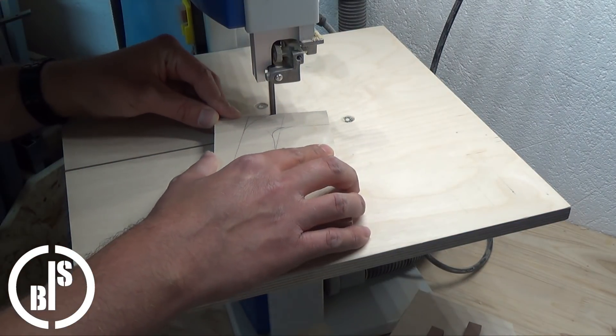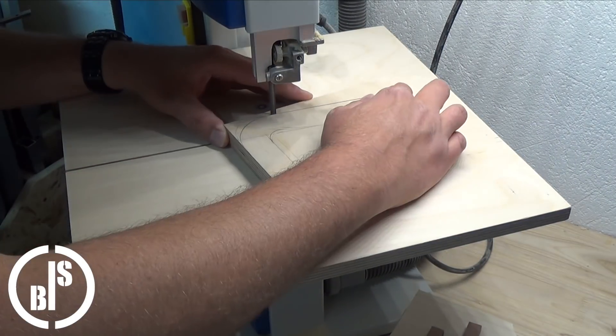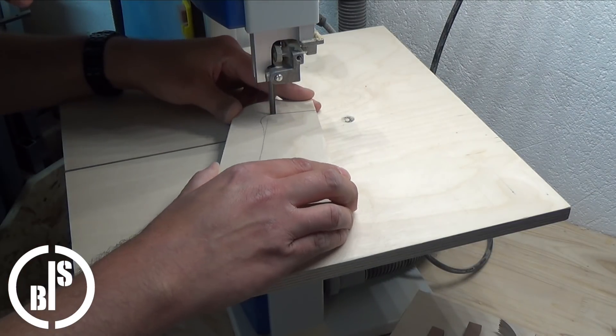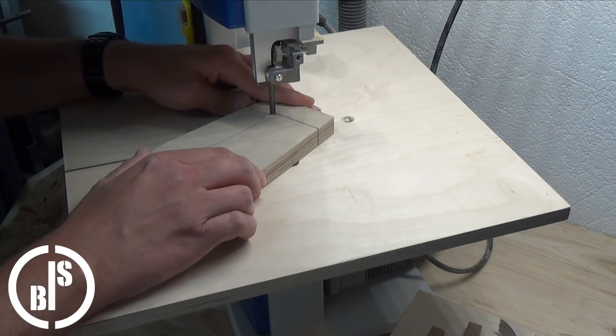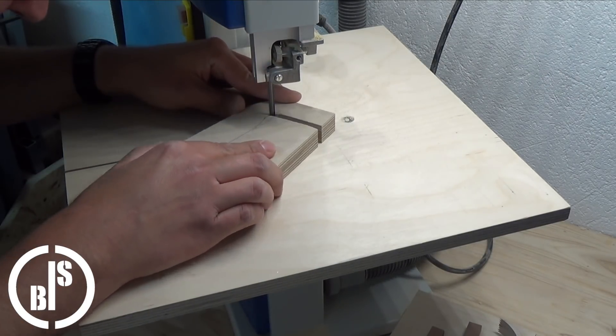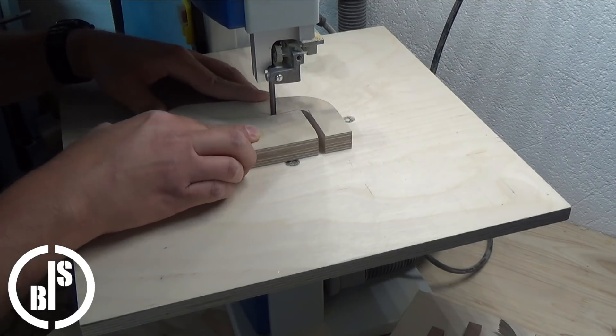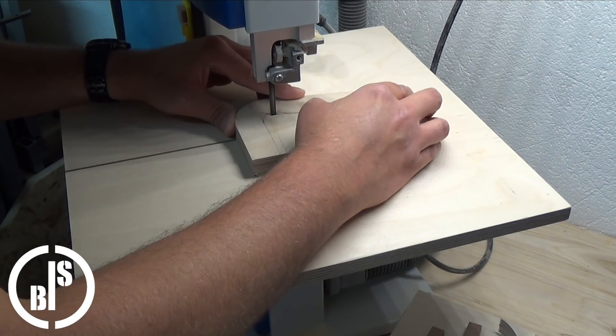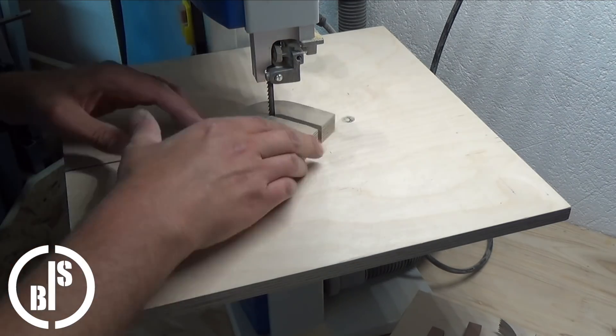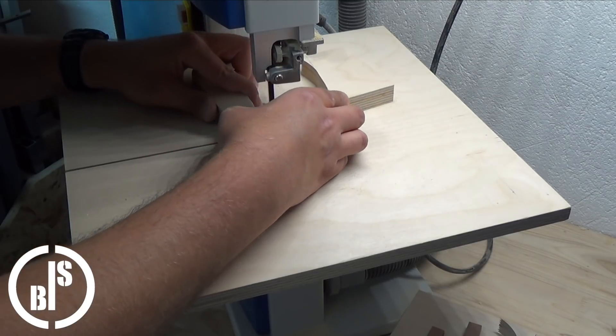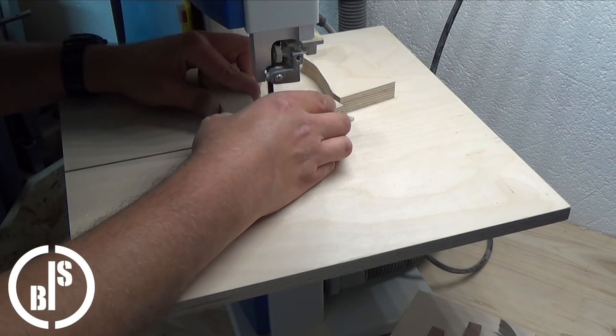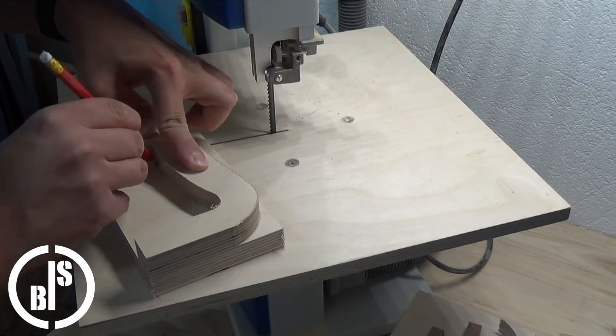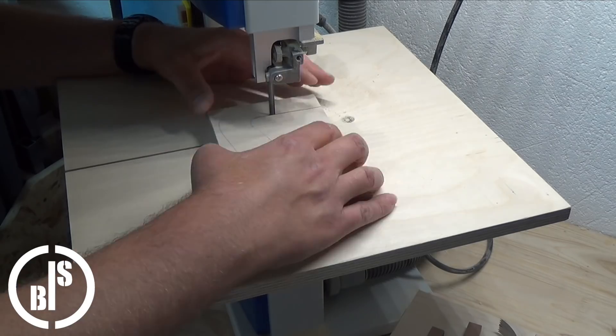I use the bandsaw to cut out the drawn handle. Then I use the cut out handle to transfer the shape to the other piece and cut it out also.